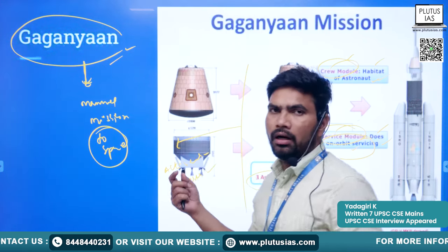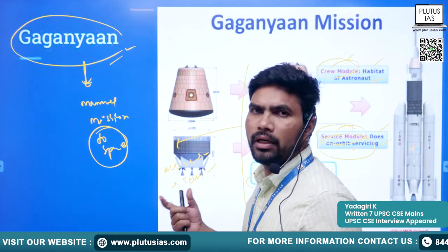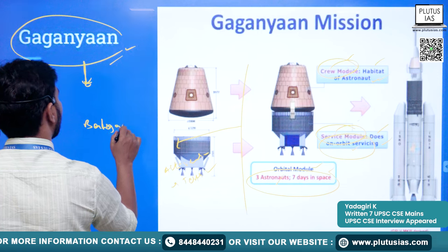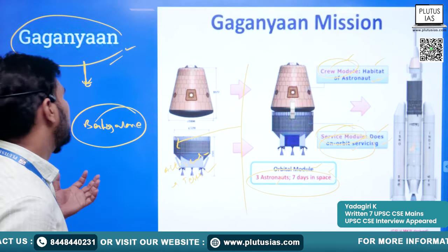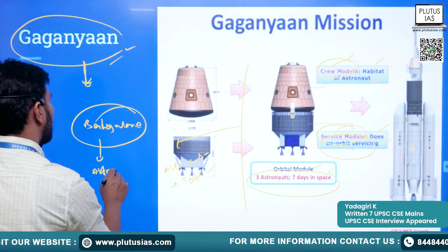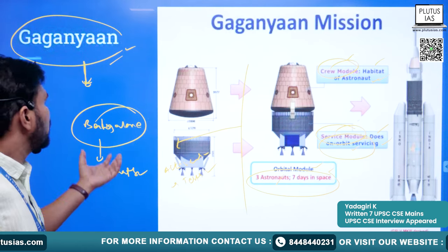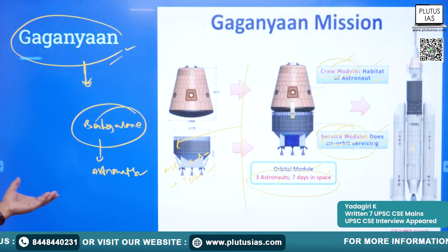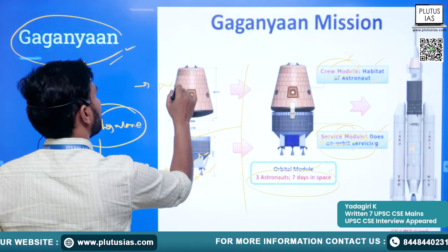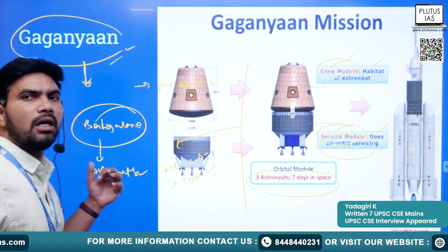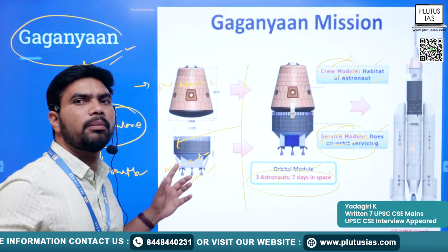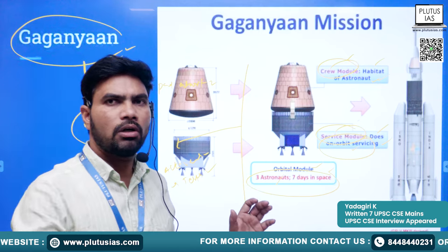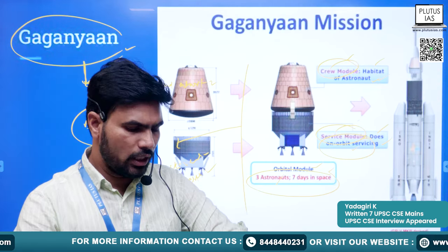Many tests are being conducted regularly to make Gaganyaan successful. A separate center has been built in Bangalore where space-like conditions are created and astronauts are being trained. Tests such as the pad abort test have been conducted recently. Please stay updated with this information. This concludes today's lecture on satellites and satellite systems. Thank you for joining — see you tomorrow. Have a good day.